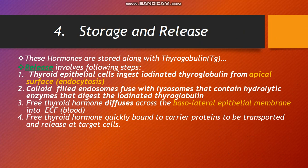Storage and release: these hormones are stored along with thyroglobulin, a large-weight protein. Release involves the following steps: thyroid epithelial cells ingest iodinated thyroglobulin from the apical surface by endocytosis; colloid-filled endosomes fuse with lysosomes containing hydrolytic enzymes that digest the iodinated thyroglobulin; free thyroid hormone diffuses across the basolateral epithelial membrane into extracellular fluid and blood; free thyroid hormone is quickly bound to carrier proteins to be transported to target cells.